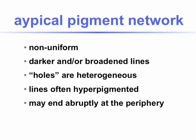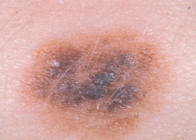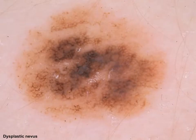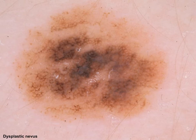An atypical pigment network is non-uniform and has dark and/or broadened lines — broadened lines are very important. The holes are heterogeneous in diameter and size, and the lines are often hyperpigmented. It may end abruptly at the periphery. Here is the case of a dysplastic nevus clinically and dermoscopically. In the center we see rests and remnants of pigment network, but it's not a regular pigment network anymore. At higher power you can appreciate the atypical pigment network.